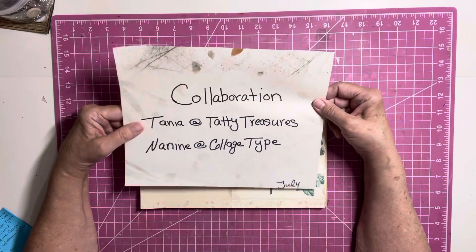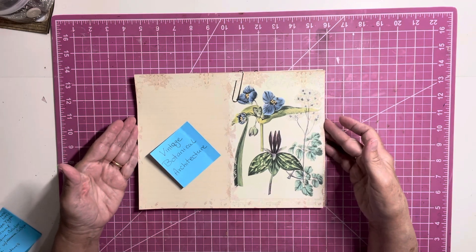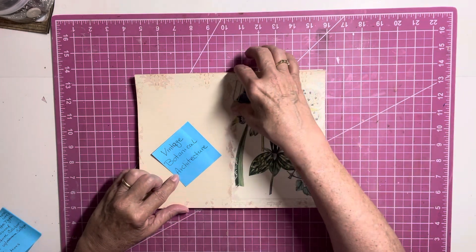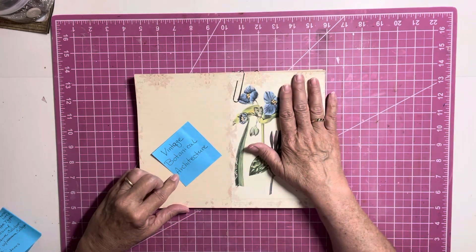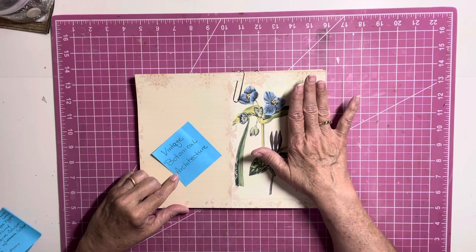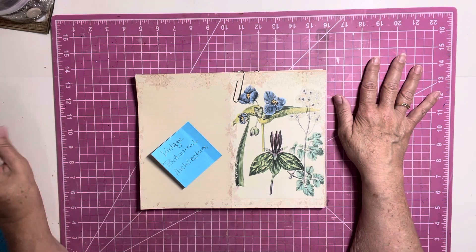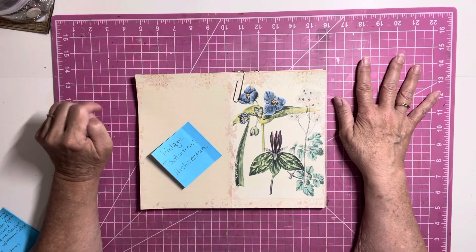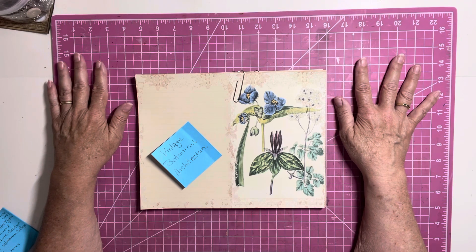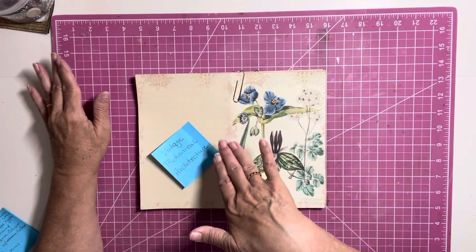I want to show you the kits. So the kit is called Vintage Botanical Architecture. And you can get part of it on Tanya's website or Etsy shop and part of it on Neneen's. And I will have the links below that you will need, and also the links to the other wonderful team that will be doing this for Tanya and Neneen. So I will have all the links below.